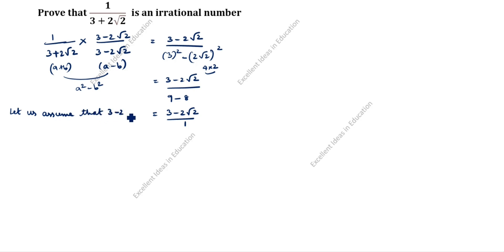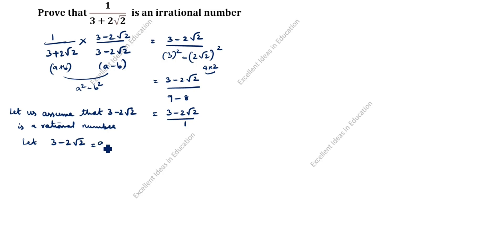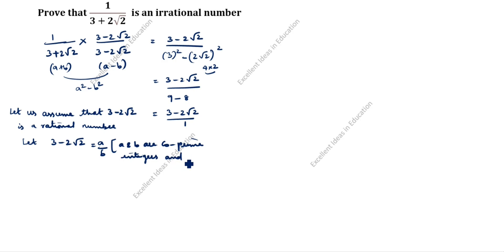Let 3 minus 2 root 2 equal a by b, where a and b are co-prime integers and b is not equal to 0. Any rational number can be expressed in the form a by b.